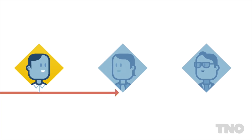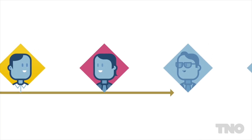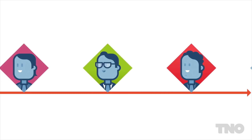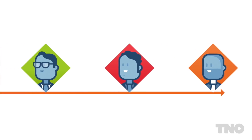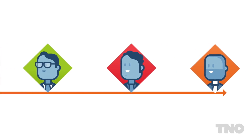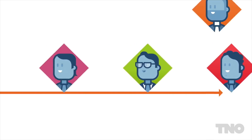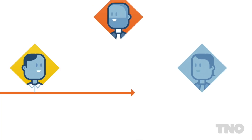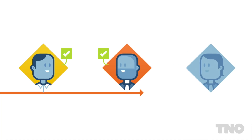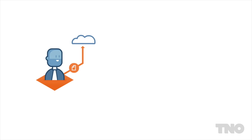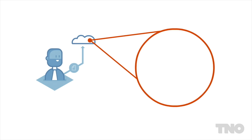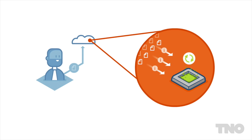The ideal situation would be to have the insights and knowledge of the supplier on how to use objects in the context of the building in a much earlier stage of the project. This is where we introduce BIMbots. In the new situation, a supplier formalizes knowledge of components in a building context into an intelligent BIM bot.